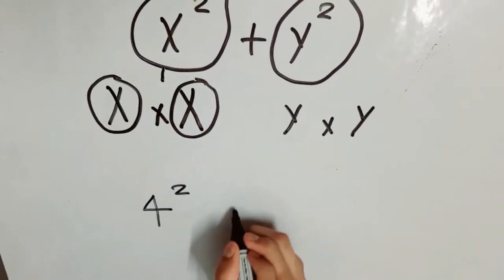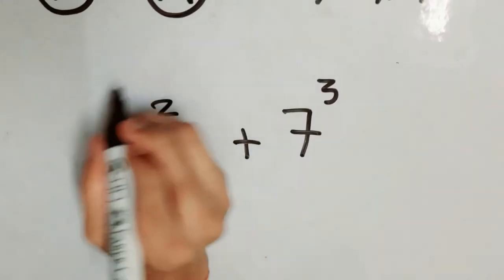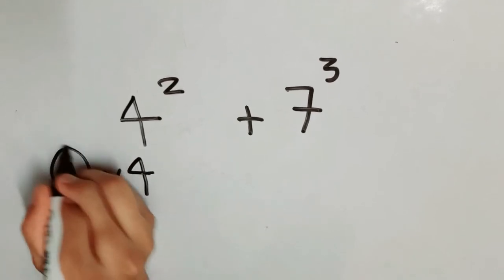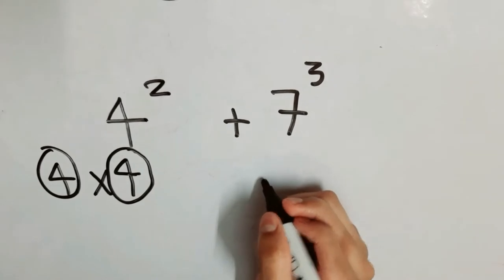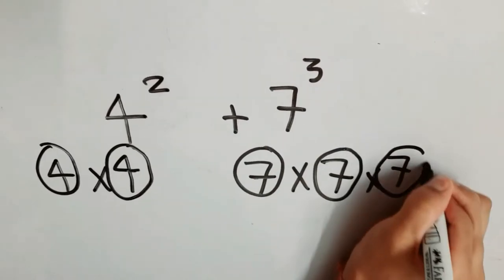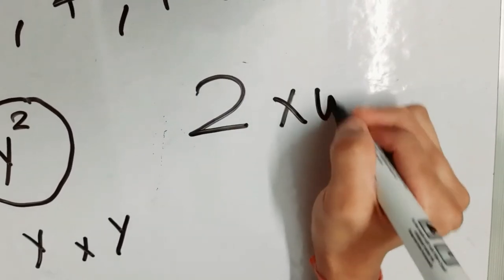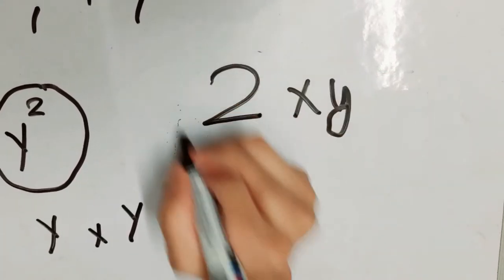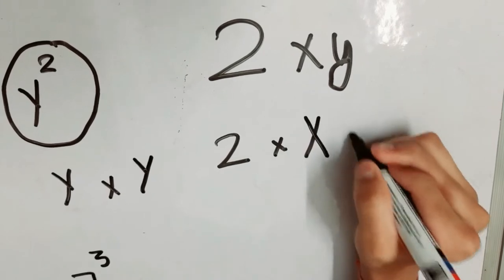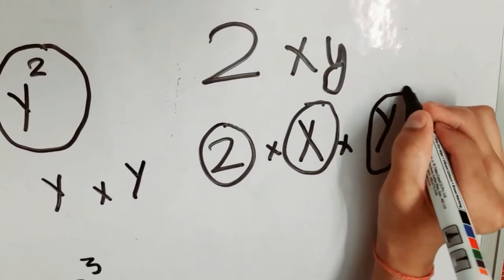Let's take another example: 4² + 7³. The factors of 4² are 4 × 4, so 4 and 4 are the factors. For 7³, we have 7 × 7 × 7, so these three sevens are the factors. Now let's take another example: 2xy. This is also called a term, and its factors are 2 × x × y. So 2 is a factor, x is a factor, and y is also a factor.